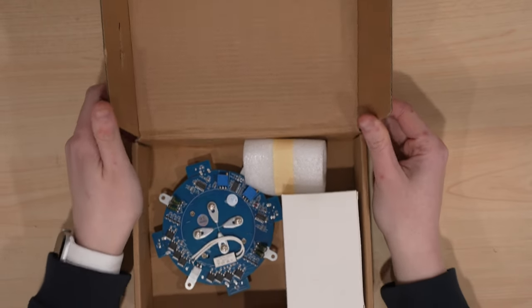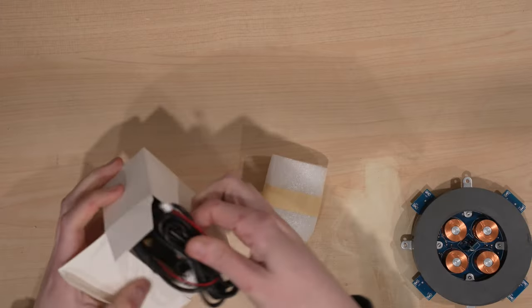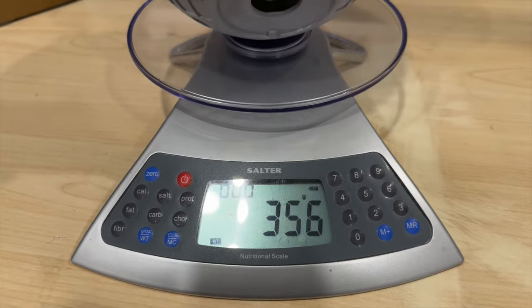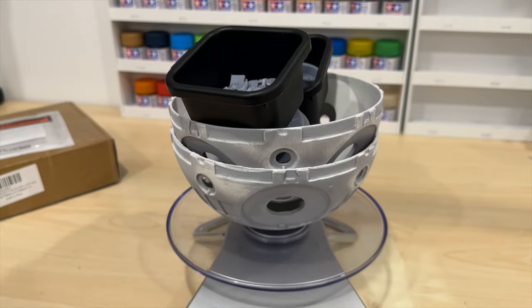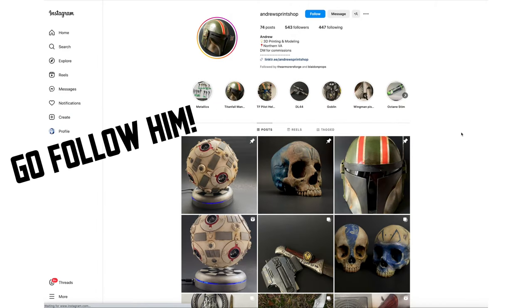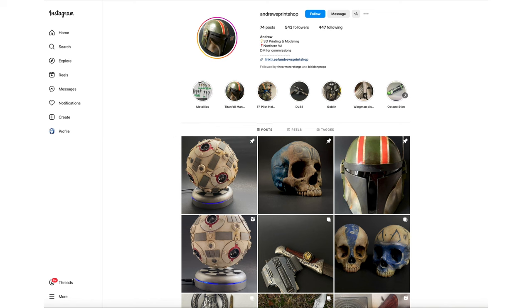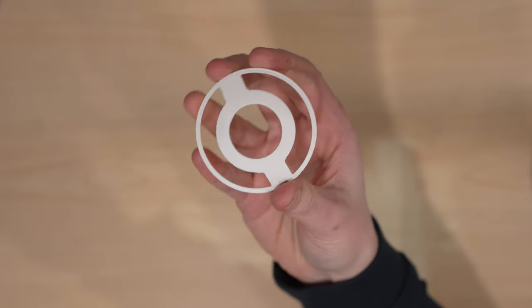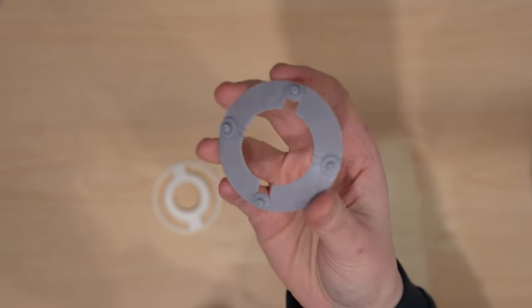Now with the levitating version, something that you need to be conscious of is its weight. The base is rated for 500 grams, and I did weigh all of the pieces to see how close I was to that maximum, which thankfully I was well under. But this is the point in my build where the wonderful Andrew's Print Shop on Instagram probably saved this entire project. He'd just tried to make one of his own and it very sadly didn't float. He had some amazing tips and ideas on how to possibly fix that though.